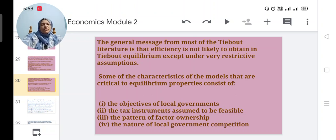Then the general message from the Tiebout literature is that efficiency is not likely to obtain. So we can conclude Tiebout equilibrium except under very restrictive assumptions. Some of the characteristics of the model are critical to equilibrium properties, consisting of objectives of local government, a tax instrument is assumed to be feasible, the pattern of factor ownership, and nature of local government competition. So today we have discussed two theories. If you have any doubt, please contact me. Thank you.